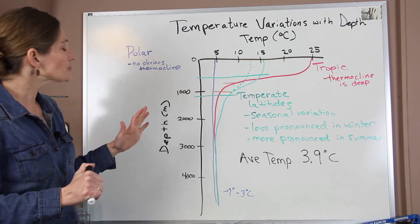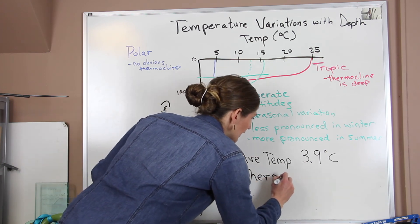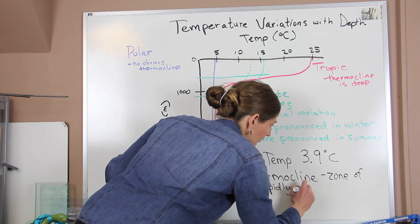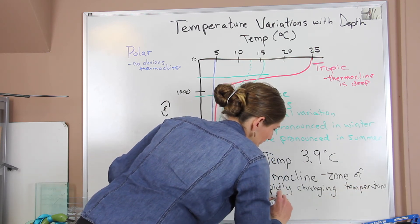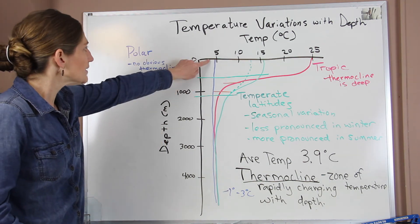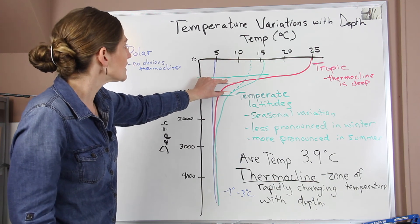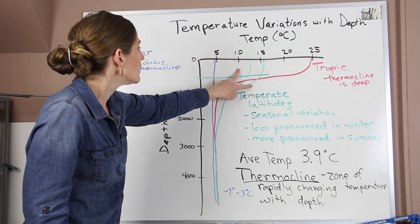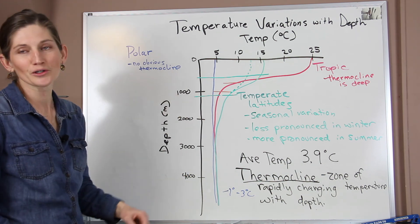That's the big picture with temperature variations at depth. The one term you want to remember is the thermocline — a zone of rapidly changing temperature with depth. In our polar areas, we don't see much change, so there's no obvious thermocline. In our tropics, we see a very significant change in a smaller but deep zone. In our temperate areas, we see seasonal variations in our thermocline, and it's going to be a much wider zone where we see that transition in temperature.